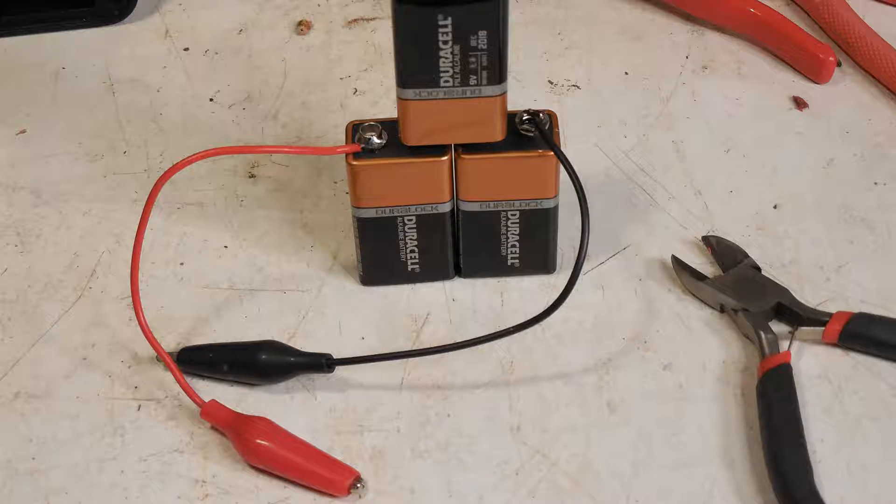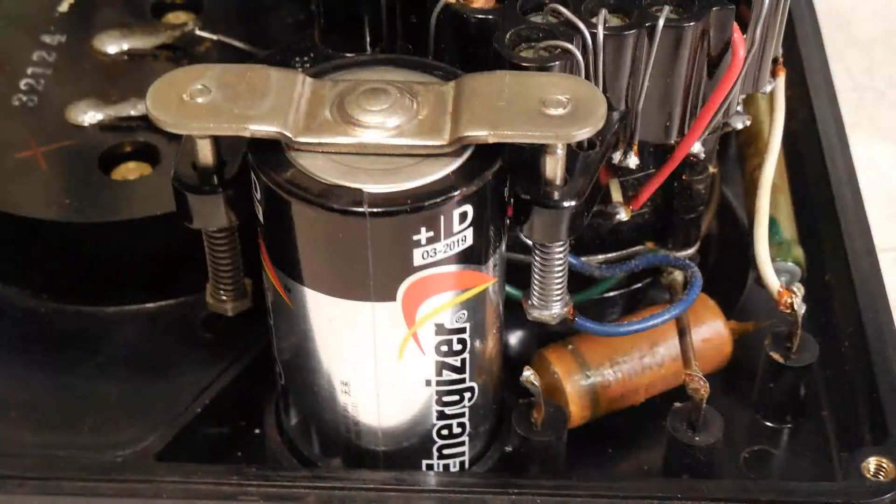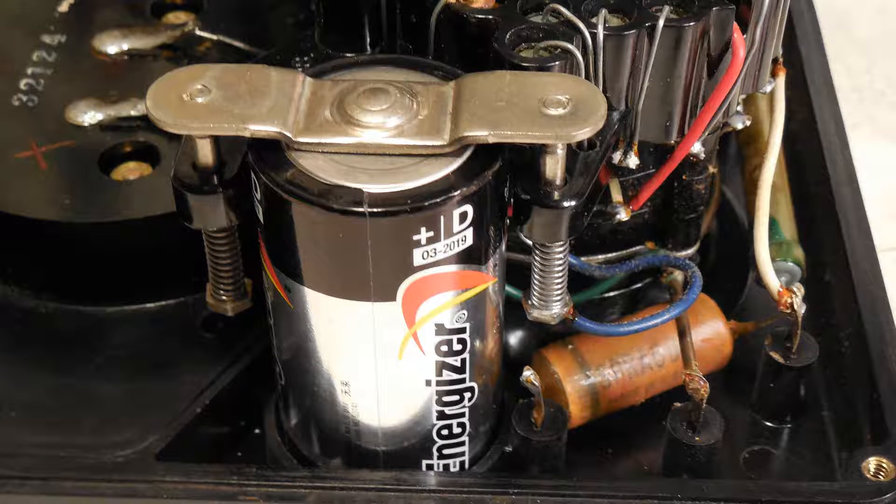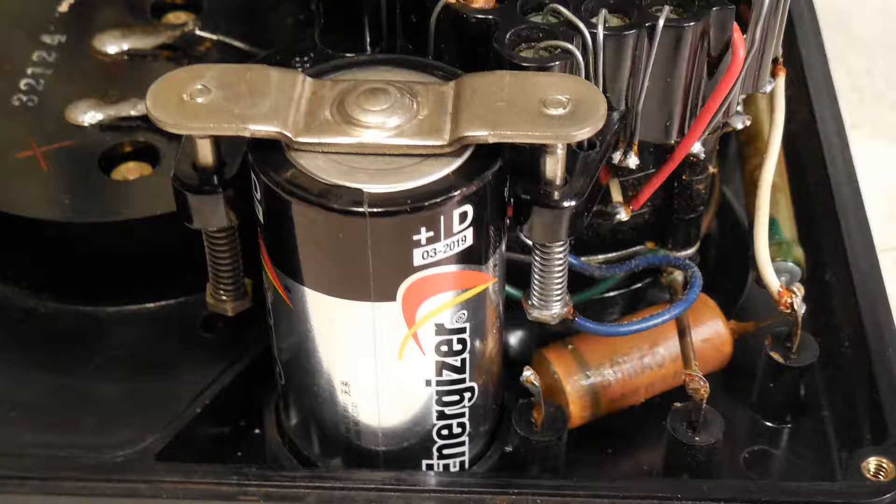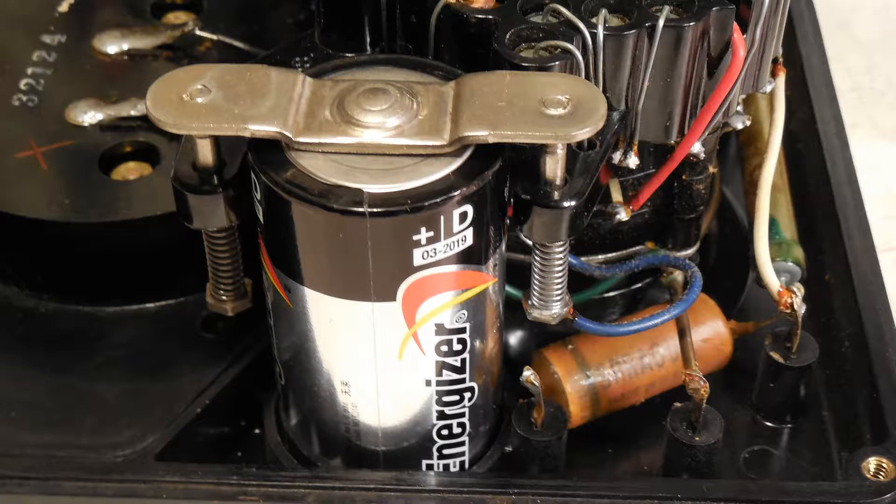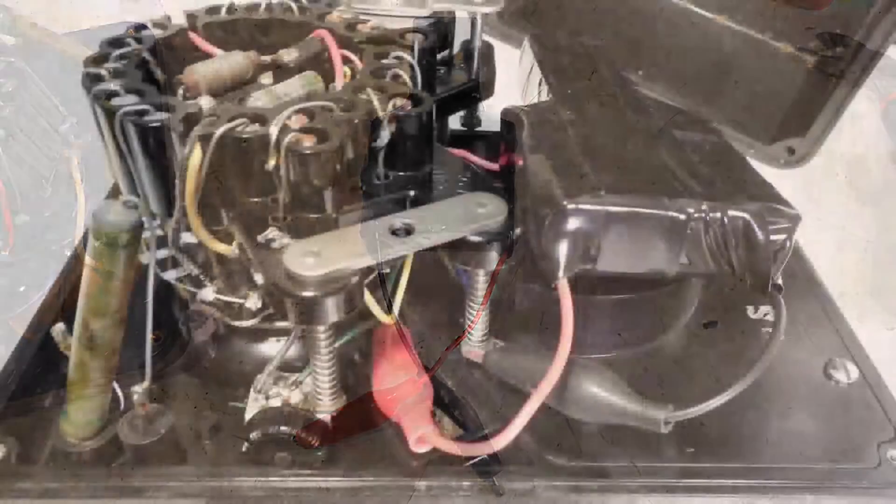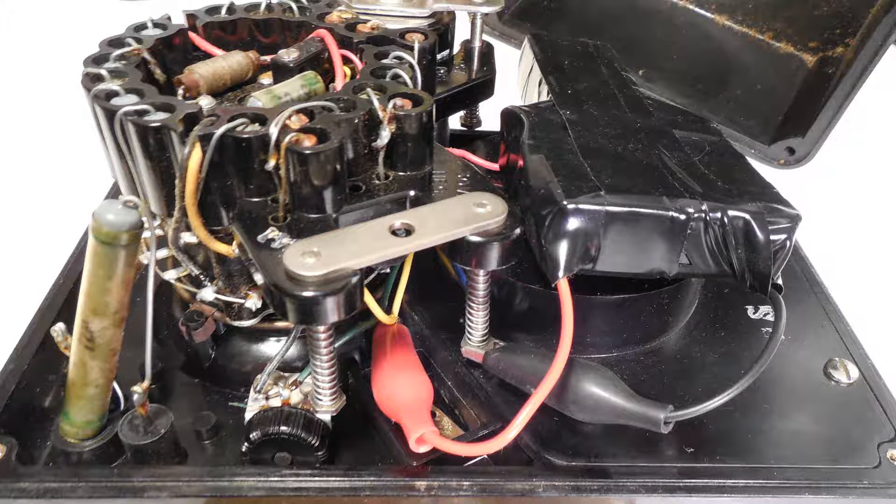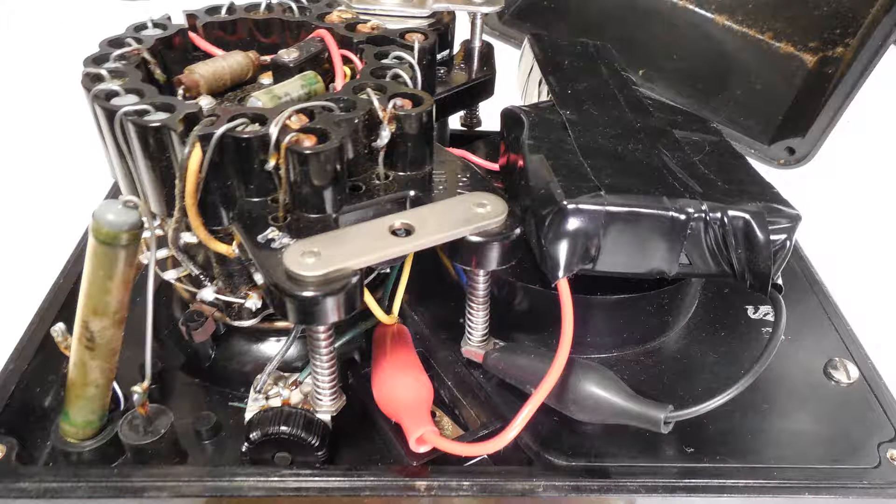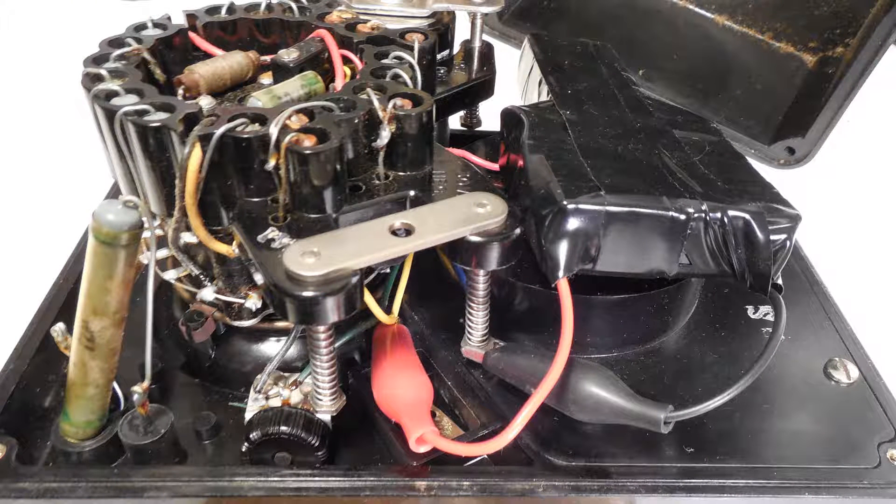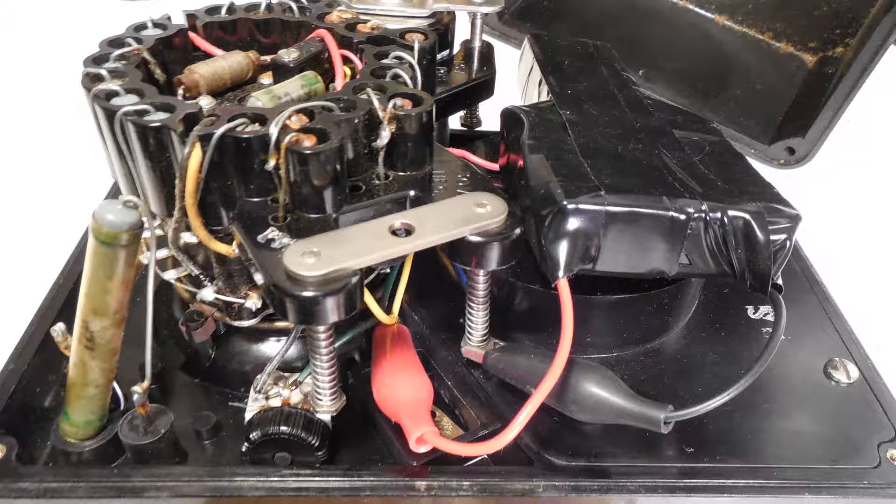Here I have installed the D-cell, and I decided to tape up the three 9-volt batteries. And here is how I'm going to install the batteries for the 30-volt supply.